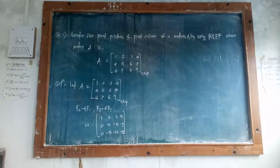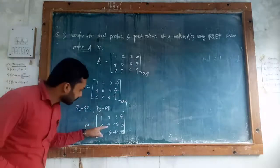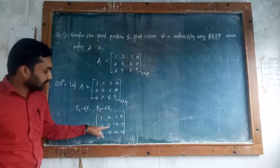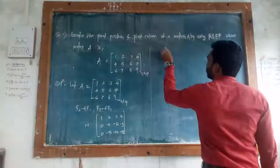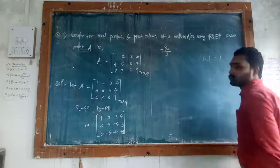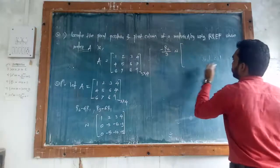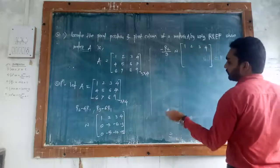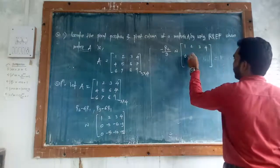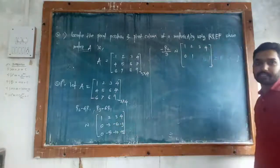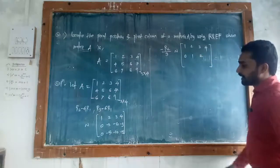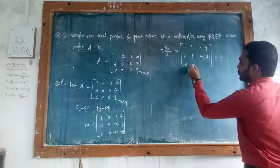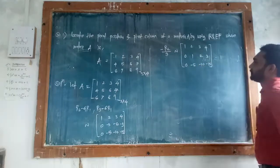Now for the next row operation, we have to make the leading entry of the second row equal to 1. So divide R2 by minus 3. That means R2 becomes R2 divided by minus 3. Your equivalence matrix: first row remains 1, 2, 3, 4. Second row: 0 divided by minus 3 is 0, minus 3 divided by minus 3 is 1, minus 6 divided by minus 3 is plus 2, minus 9 divided by minus 3 is plus 3. Third row remains 0, minus 5, minus 10, minus 15.